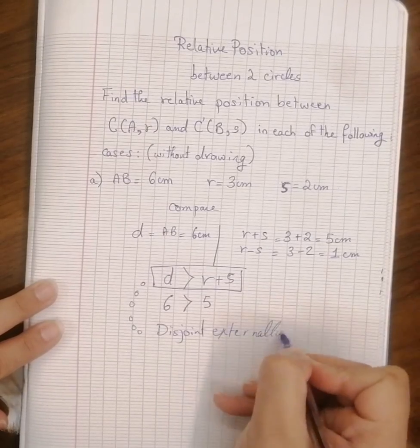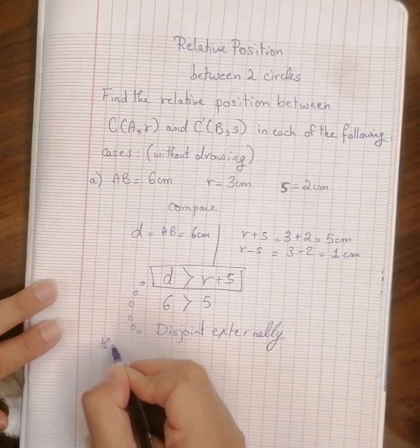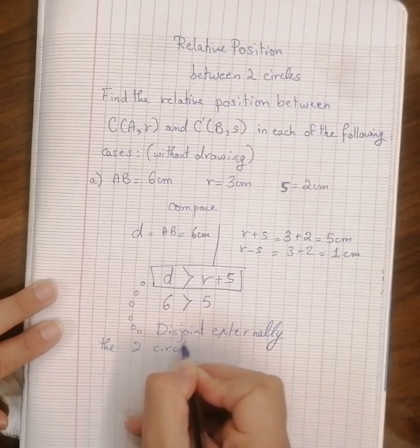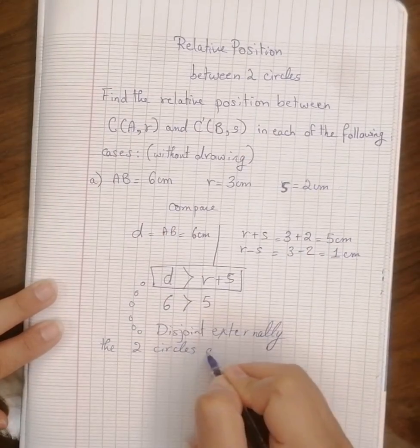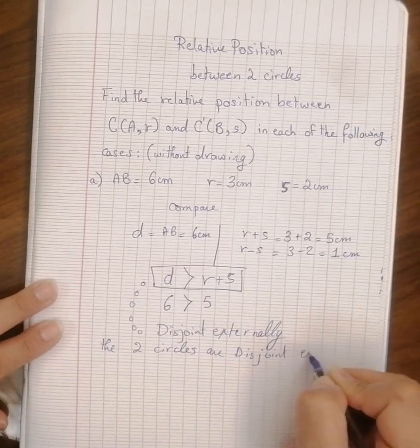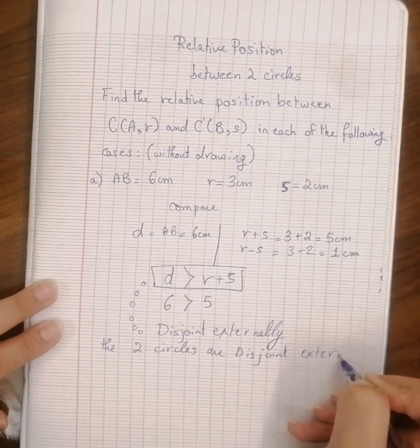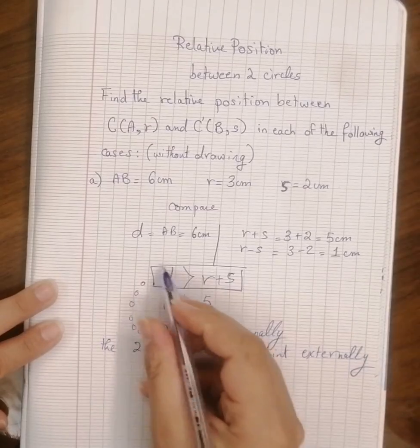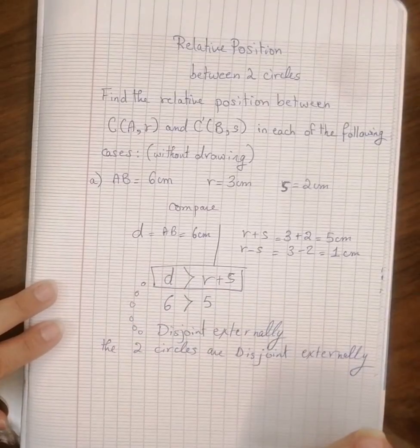Externally. So the two circles, which are C and C prime, are disjoint externally, because we get the rule d greater than r plus s.